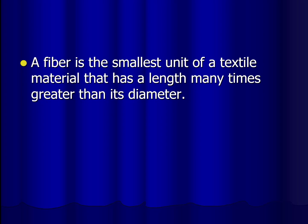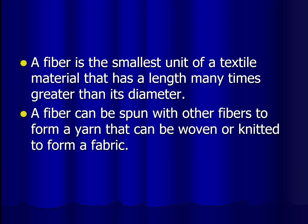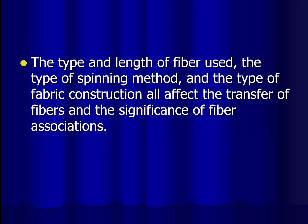A fiber is defined as the smallest unit of a textile material that has a length many times greater than its diameter. You can think of a thread being made out of fibers that are spun together. A fiber can be spun with other fibers to form a yarn that can then be woven or knitted to form a fabric. The type and length of the fiber, the spinning method, and the fabric construction can all affect the transfer of fibers and the significance of those fiber associations.